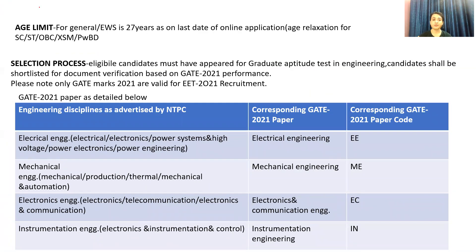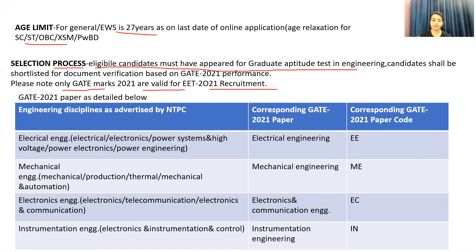The age limit is up to 27 years as on the last date of online application. Age relaxation is available for SC/ST candidates. For the selection process, eligible candidates must have appeared for the Graduate Aptitude Test in Engineering. Please note, only GATE marks from 2021 are valid for EET recruitment.